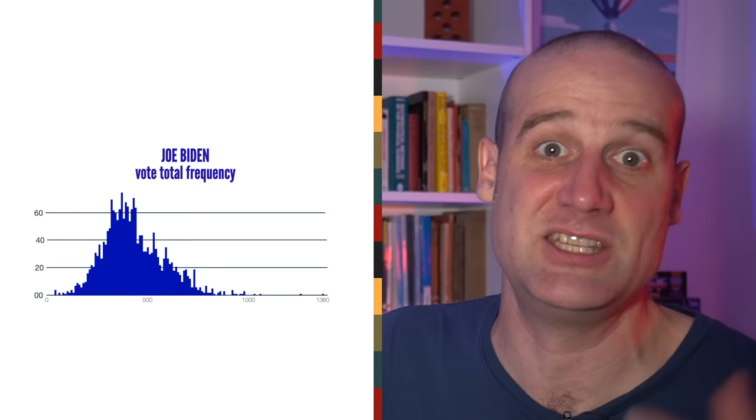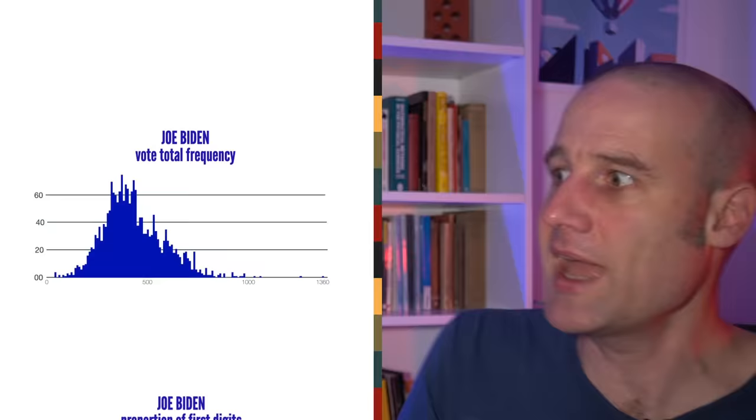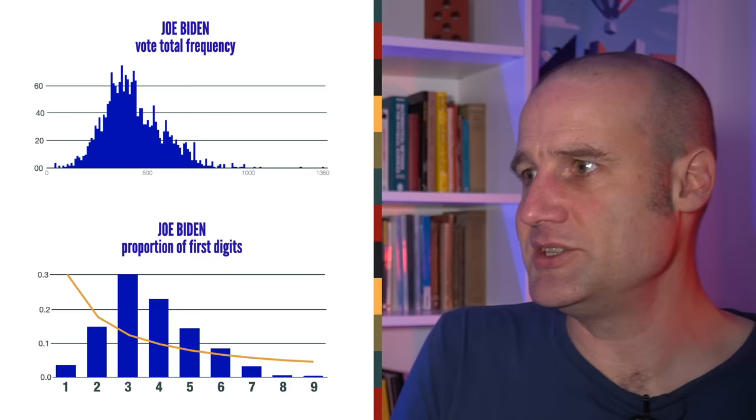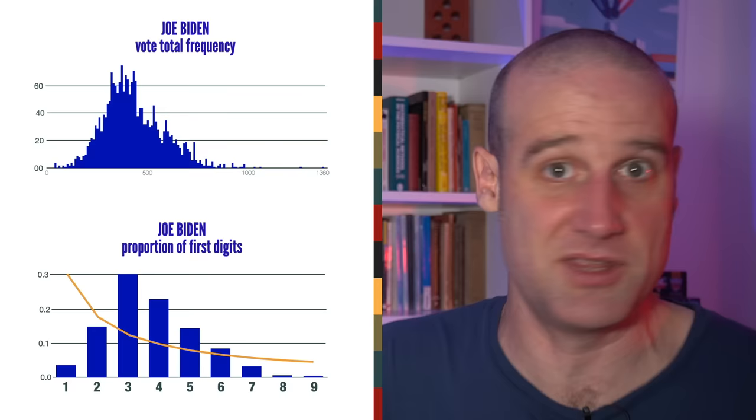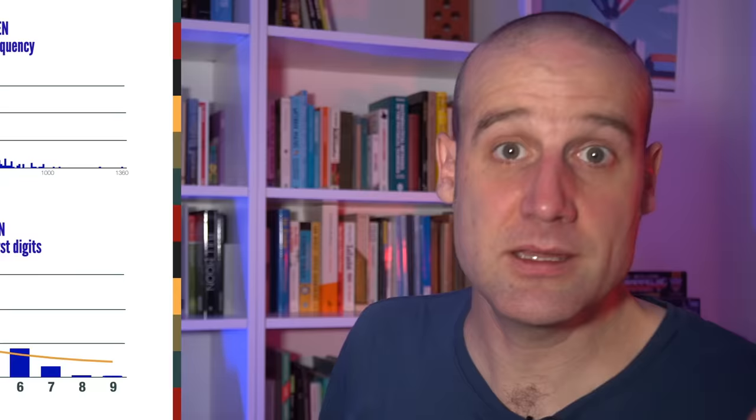So basically the range of the total number of votes available in each precinct was clumped around the middle of three digit numbers. And Biden got a really consistent percentage of that, which is why they've got this normal distribution. And if you look at their Benford first digit results, what you're actually looking at is just a simplified version of that distribution. So given this is the distribution of the votes, which perfectly matches what we would expect from everything else we know about the area, of course that's what we're going to get.